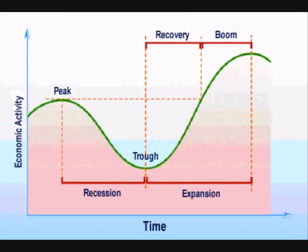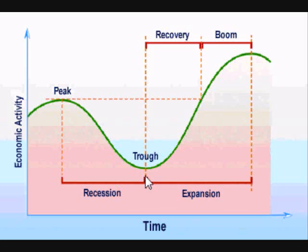Cyclical unemployment, also known as demand-deficient unemployment, comes from fluctuations in the business cycle. The business cycle is named for the stages an economy goes through and generally has four parts: Growth, Prosperity, Decline, and Recession. Eventually, a recession will always be followed by expansion, and expansion will always be followed by recession. The full loop of going from recession to growth and back to recession again is called the business cycle. Cyclical unemployment comes from the periods of decline and recession in the business cycle.